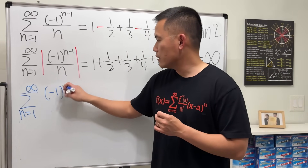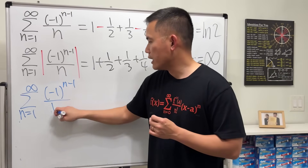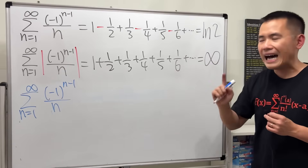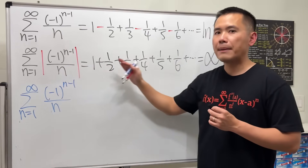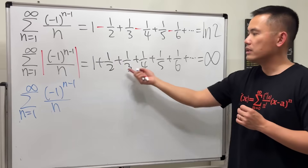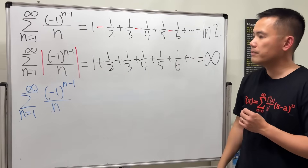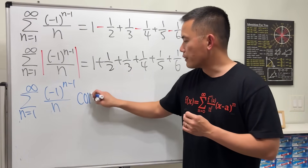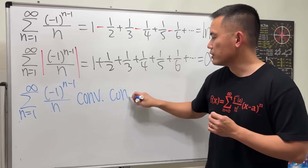So the series (-1)^(n-1) / n converges, but it does not converge absolutely, because once you apply the absolute value, this version diverges to infinity. We say this series converges conditionally.